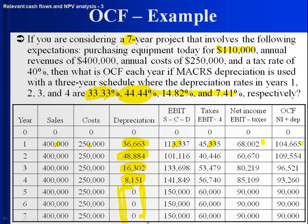Years 5, 6, and 7 are the same: $400,000 minus $250,000 with no depreciation gives taxable income of $150,000, taxes of $60,000, net income of $90,000, and operating cash flow of $90,000. Again the pattern is clear — if we simply looked at net income, we'd say year 2 is the worst. But we're more sophisticated: operating cash flow in year 2 is actually the highest, because the large depreciation expense lowers taxable income, which lowers taxes. We get to keep more in our own pockets.